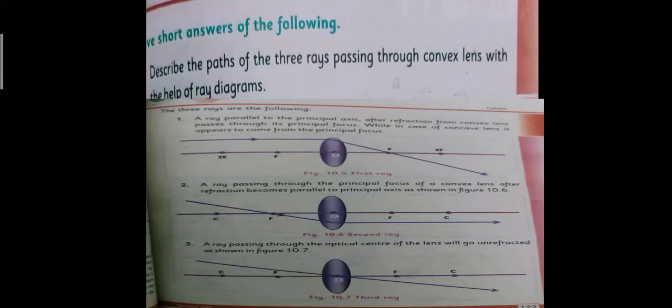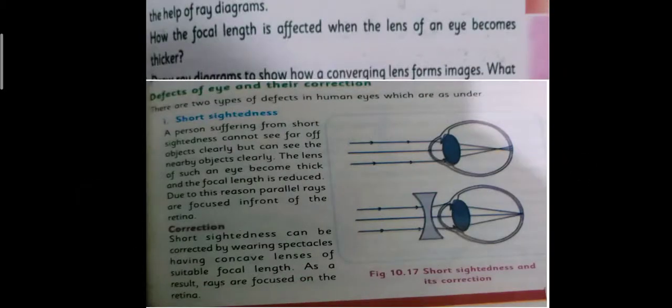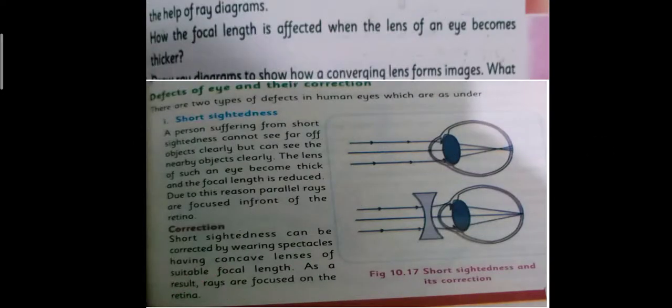So convex lens with the help of the diagram, you can see over here three rays passing through convex lens. You can see here.